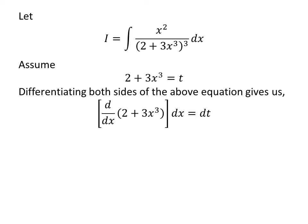Let us find the value of differential of t. Taking the differential of both sides of the equation gives us: the derivative of (2 plus 3x³) with respect to x, times dx, equals dt. We know the derivative of (2 plus 3x³) is 9x², so 9x² dx equals dt. Shifting 9 to the right-hand side gives us x² dx equals (1/9) dt.